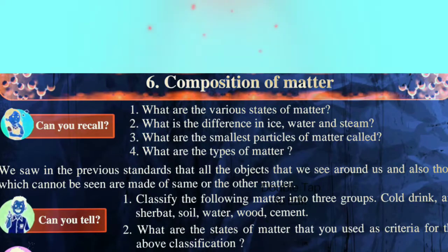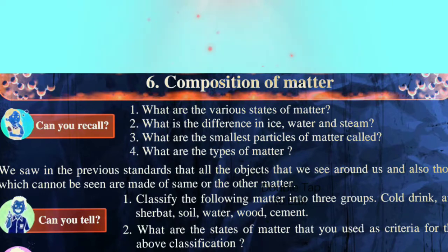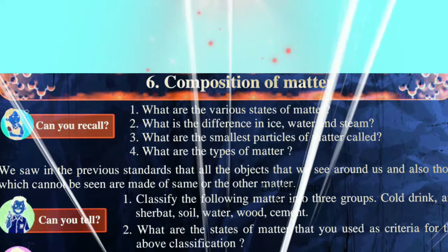Can you recall, students, what are the various states of matter? What is the difference in ice, water and steam? What are the smallest particles of matter called and what are the types of matter? We saw in the previous standard that all the objects that we see around us, and also those which cannot be seen, are made of one or the other matter.